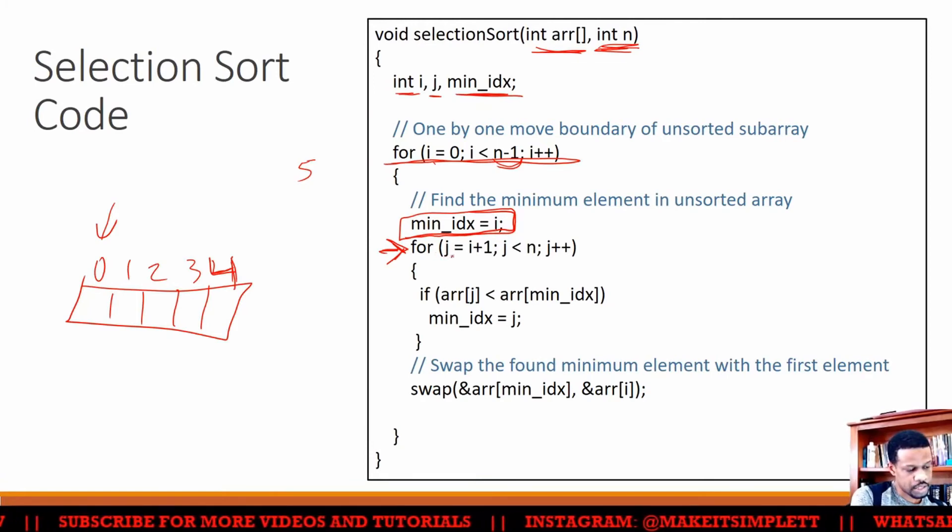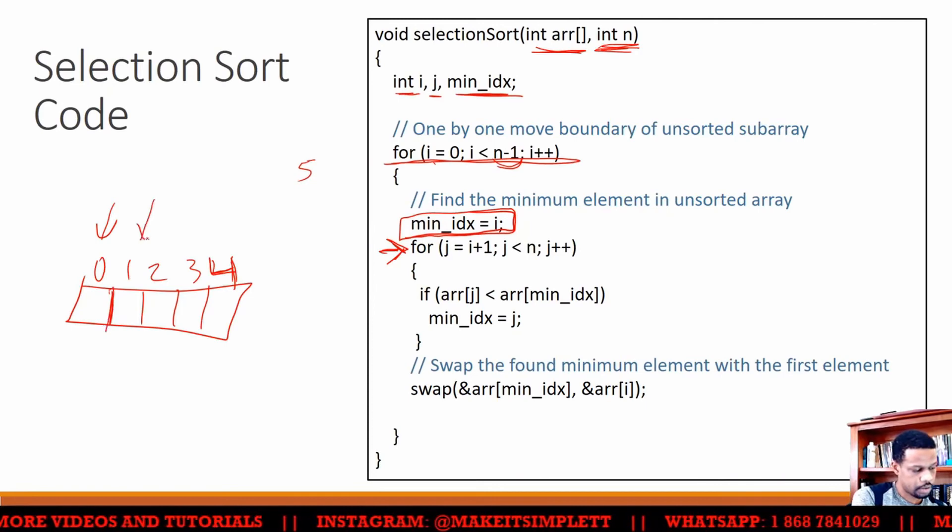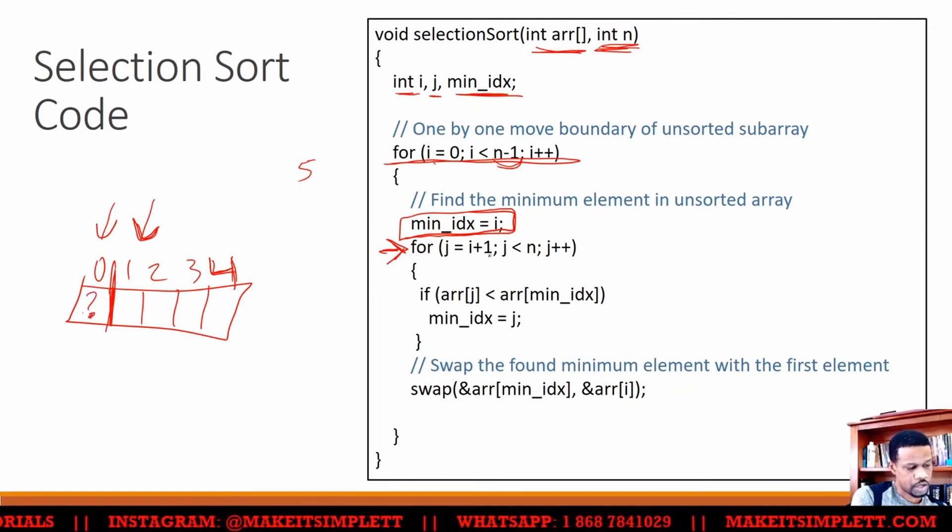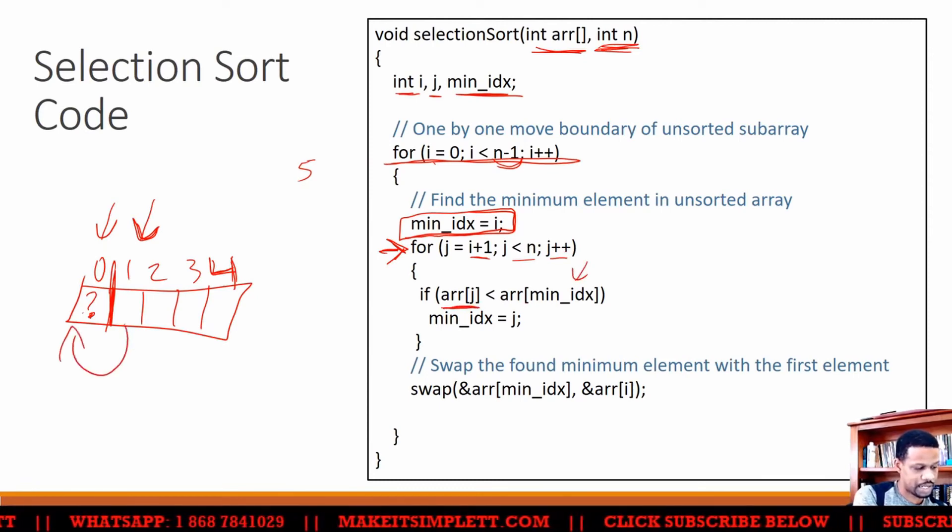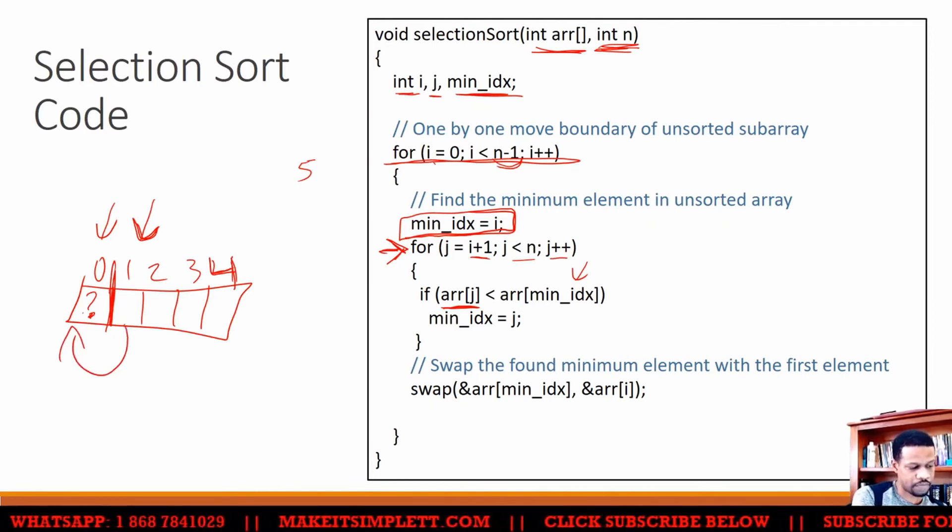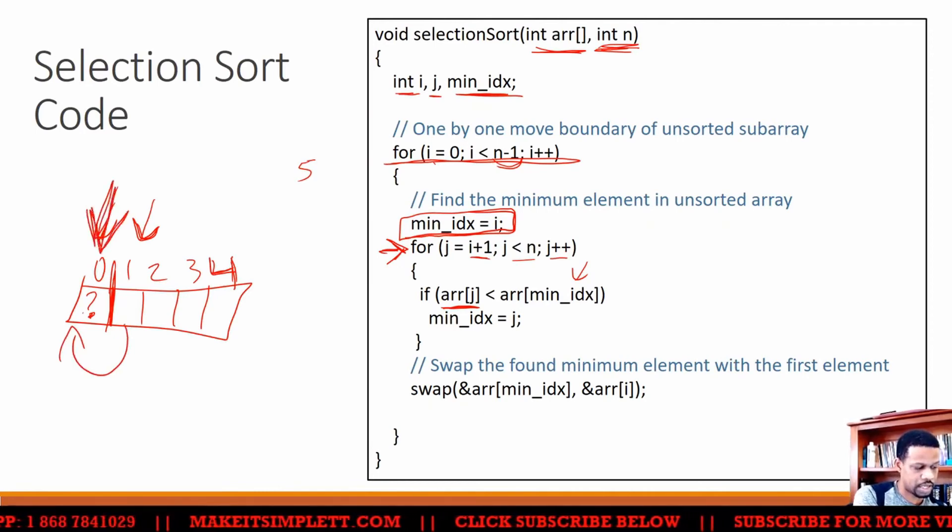So it's going to check from location j plus 1, which is here, because I really want to figure out if I'm going to swap this value or not. I'll go from j plus 1 to n. And then I'm going to say if arr[j] is less than the minimum index. So if this is less than that minimum index, because remember I kept track of that minimum index which is this one here at the start.